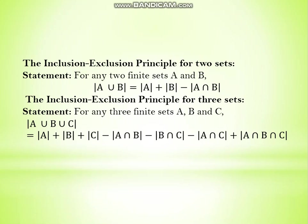For three sets, the cardinality of A∪B∪C — meaning elements in A, or B, or C, or all three, or any pairwise union — equals cardinality of A plus B plus C, then we subtract the common parts: A∩B, B∩C, and A∩C, and then we add back A∩B∩C, which counts elements in all three sets.